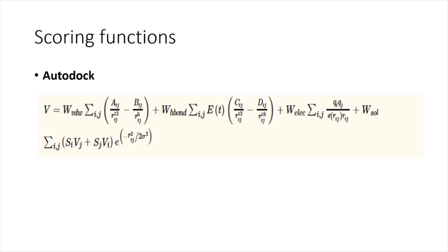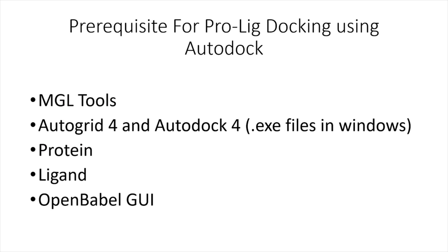The scoring function determines the pairwise atomic energy, evaluated as the sum of van der Waals, hydrogen bond, Coulomb, and desolvation energies. This gives us the binding energy, which we use to understand the binding interaction between the protein and ligand molecule.